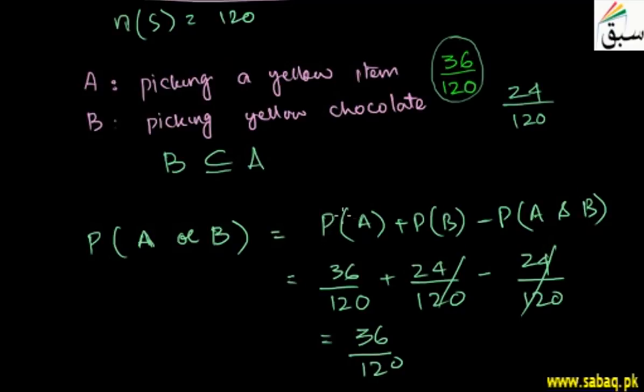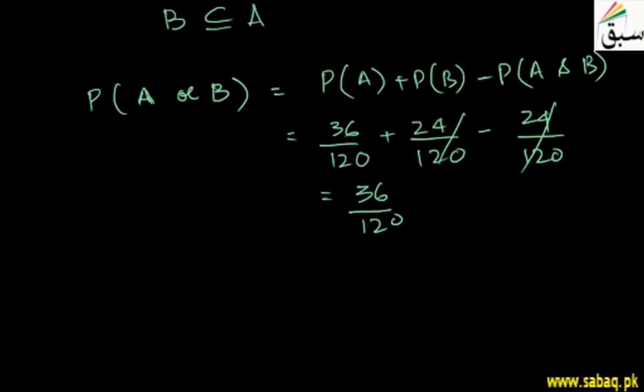The probability of A is the final answer. Here we can see when there's a subset, the probability of A and B equals the probability of the subset, which equals the probability of the superset, which equals the probability of A.